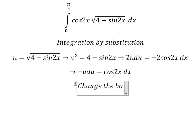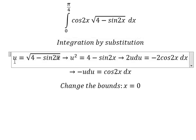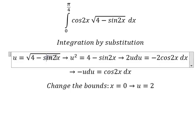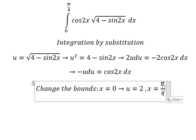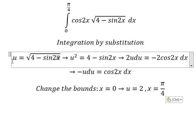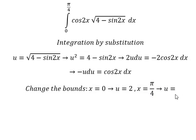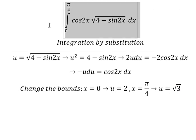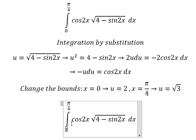Next, we need to change the bounds. When x equals zero, we put zero in here to find the value of u, so u equals two, because the square root of four is two. When x equals pi over four, we put pi over four in here and we find u equals the square root of three. So zero changes to two, and pi over four changes to the square root of three.